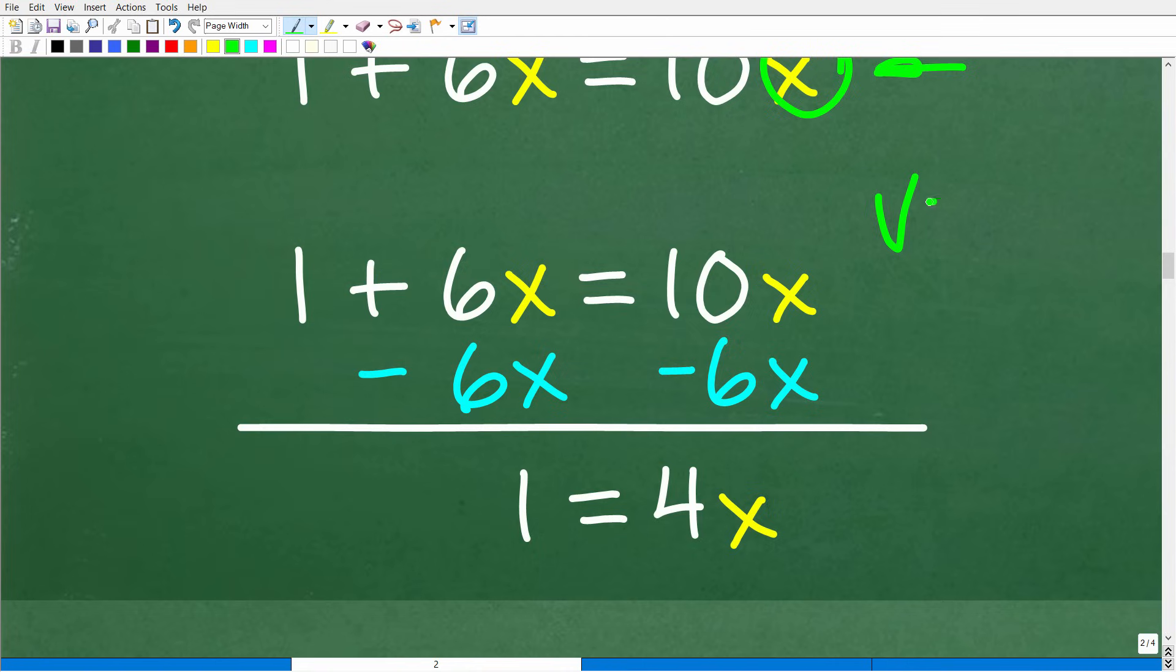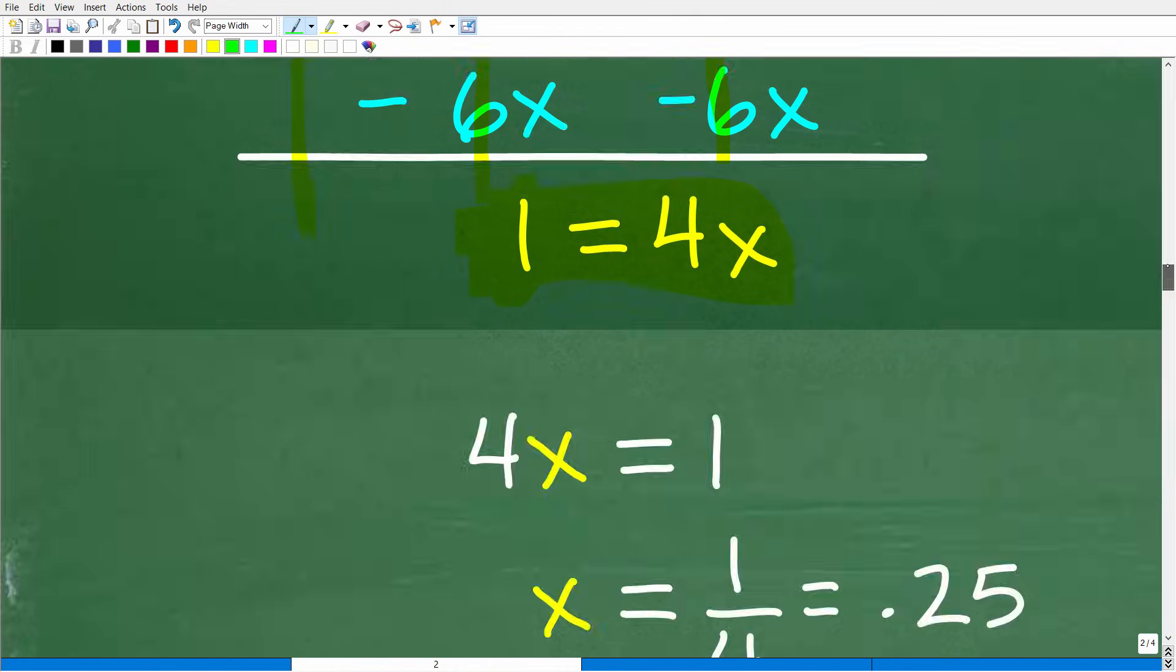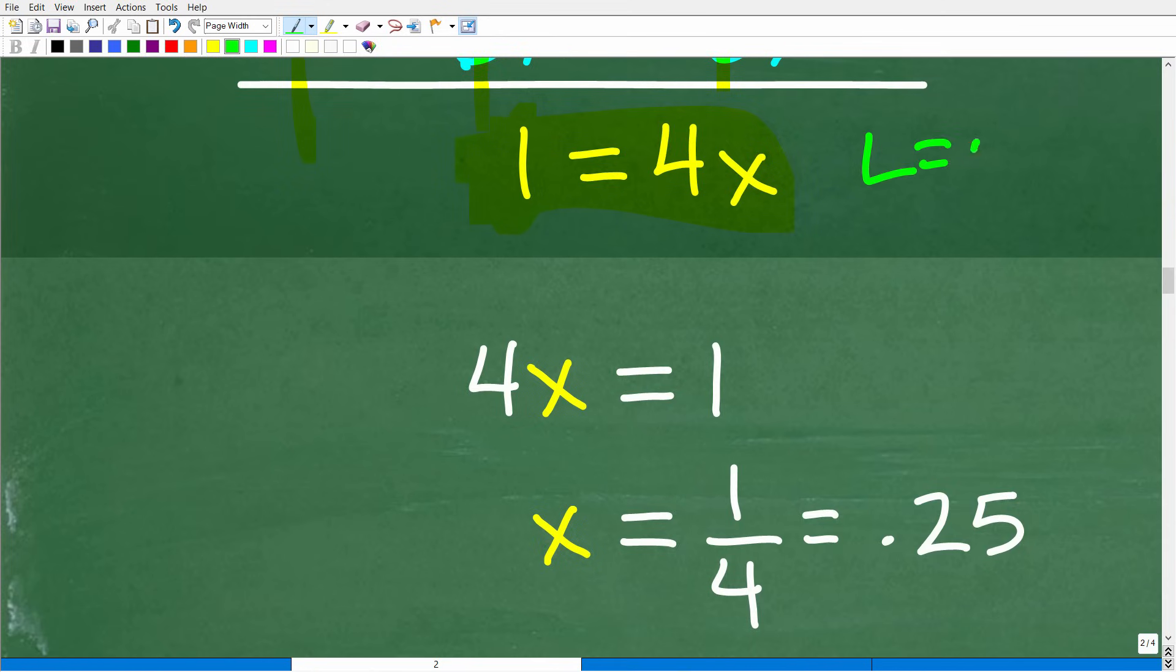What I'm going to do here is I'm going to subtract the 6x from both sides of the equation. So typically, we like to have our variables to the left-hand side of the equation and our numbers on the right, but it doesn't have to be that way as long as you have all the numbers on one side and all the variables on the other side. It's just easier in this particular equation to subtract 6x from both sides because when I do that and add down, I'm going to get 1. The 6x are going to go away, so 1 plus 6x minus 6x is 0, so this is 1 is equal to 10x minus 6x is equal to 4x.